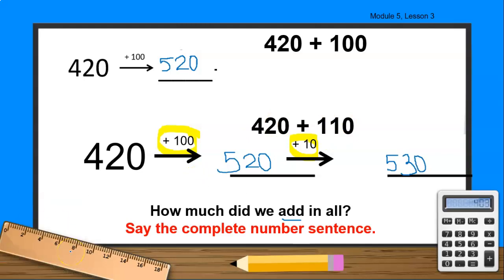So boys and girls, it's your turn to say the complete number sentence for the problem. Are you ready? Go. Yes, if you said 420 plus 110 equals 530, you're absolutely right, boys and girls. Look at this. I solved this problem in a complete number sentence and this shows the same problem in an arrow way.